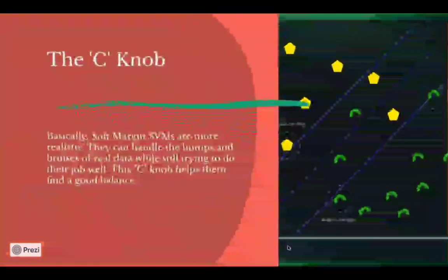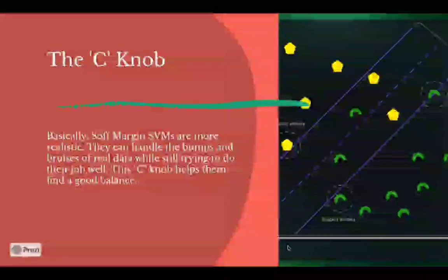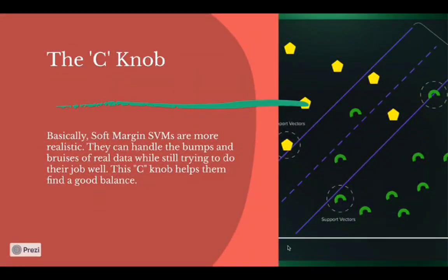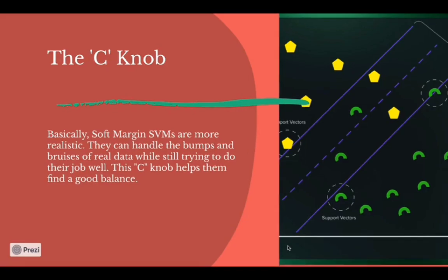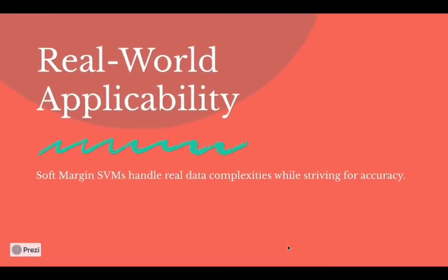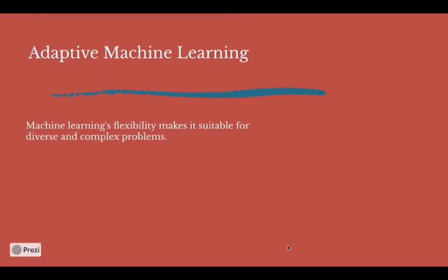Basically, Soft Margin SVMs are more realistic. They can handle the bumps and bruises of real data while still trying to do their job well. This C knob helps them maintain a good balance. These are known to handle real data complexities and adaptive machine learning.